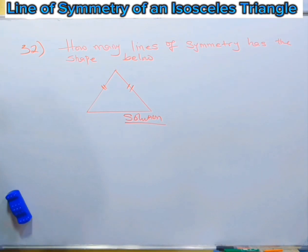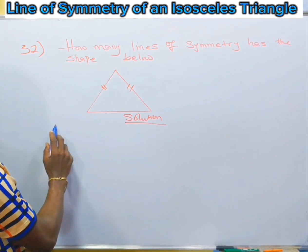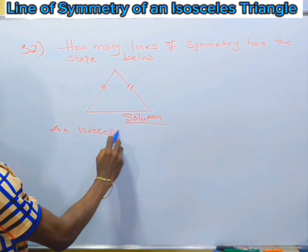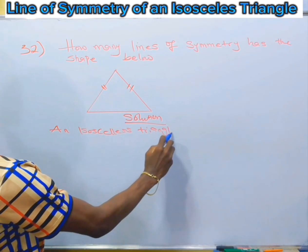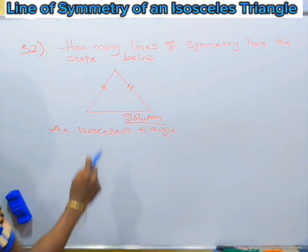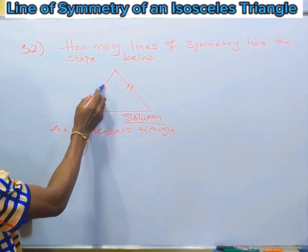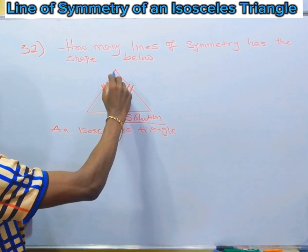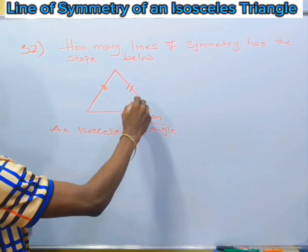What kind of triangle is this? This triangle is referred to as an isosceles triangle. Because from this demarcation on side one and side two, this indicates that this side is the same as this side.